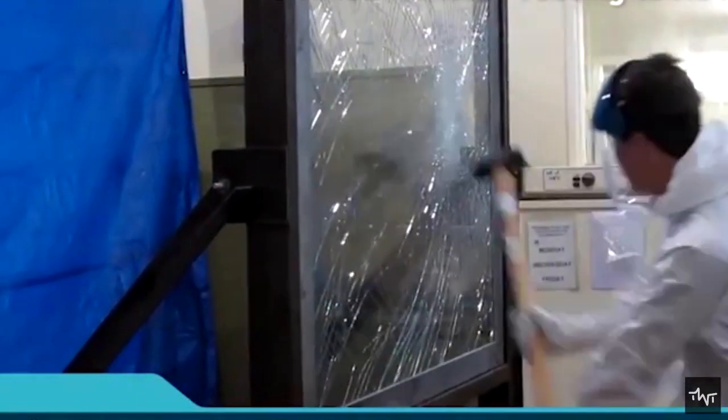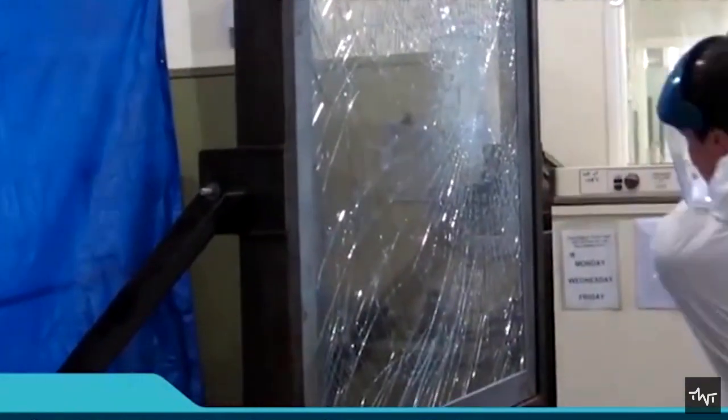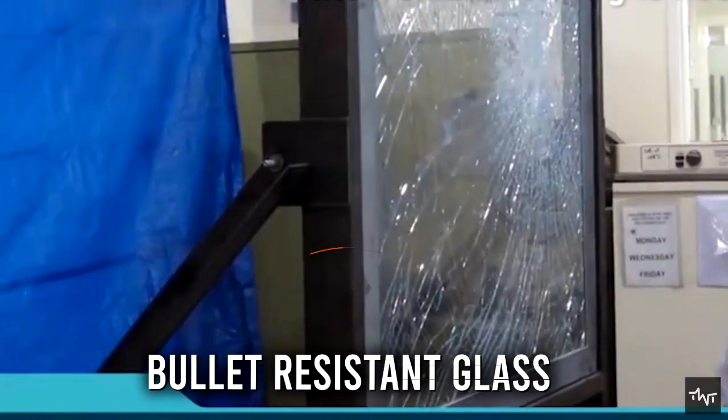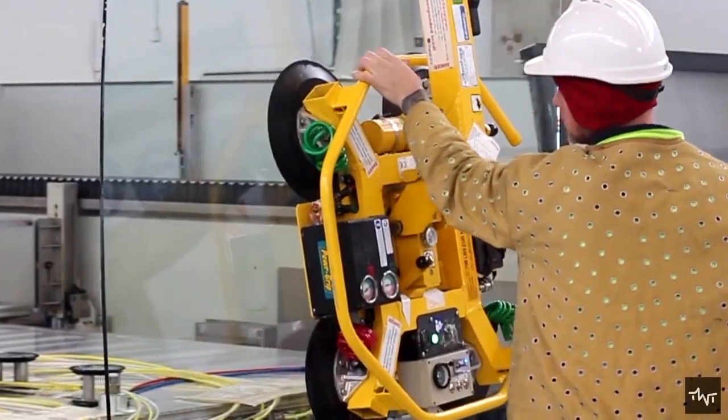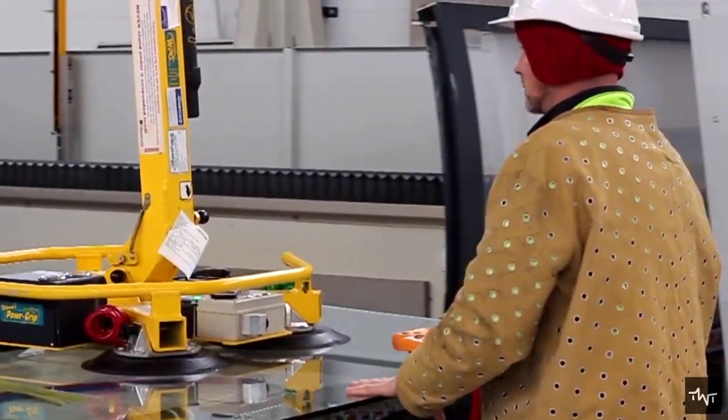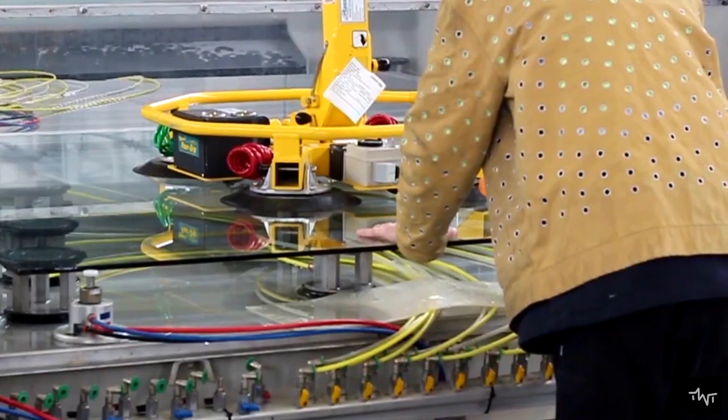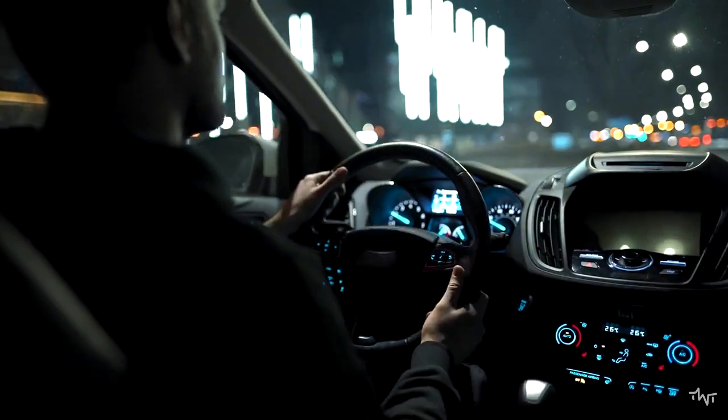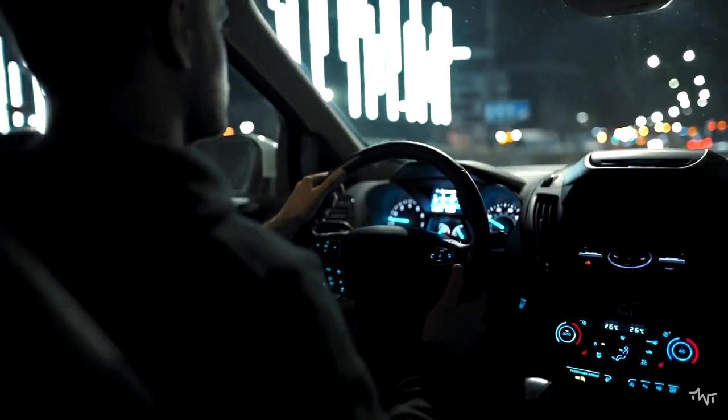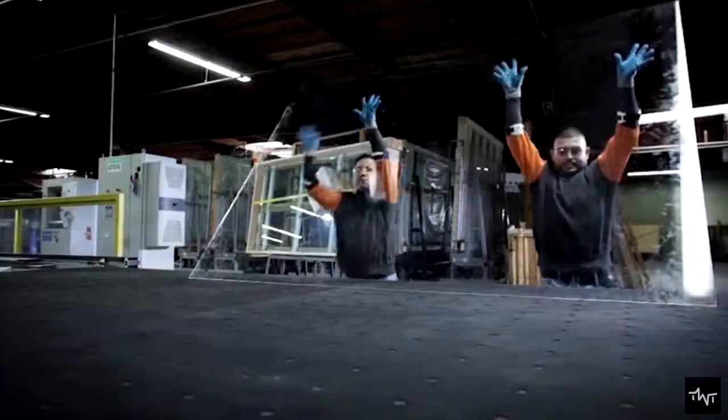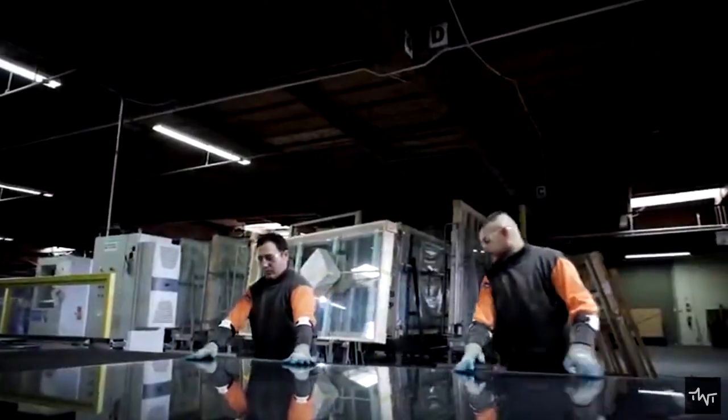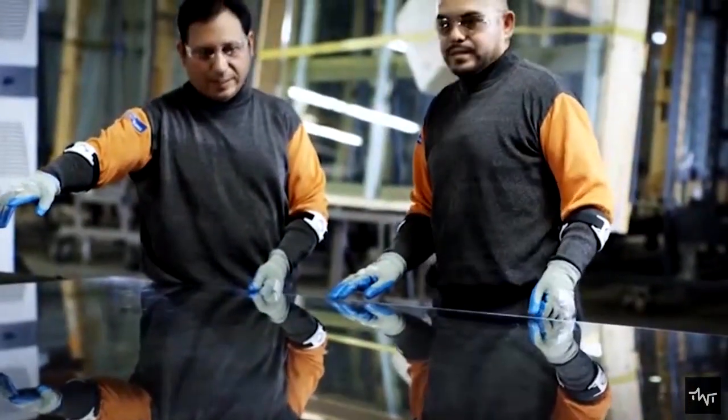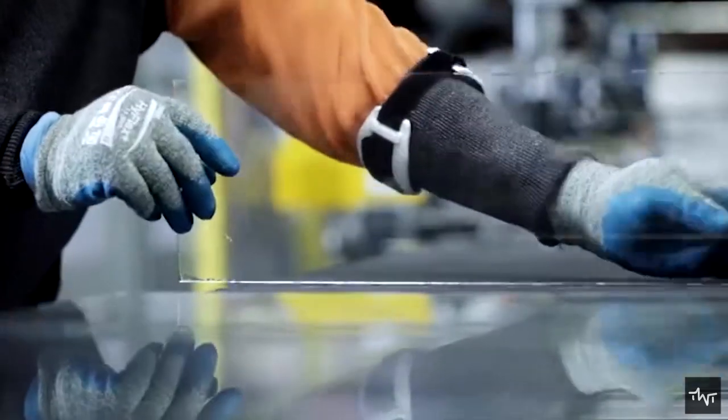Although everyone calls it bulletproof glass, the more technically correct term is bullet resistant glass, because it would be difficult to create a piece of glass with the thickness needed to make it truly bulletproof while still maintaining visibility and communication. At first glance, bullet resistant glass looks identical to an ordinary pane of glass, but that's where the similarities end.